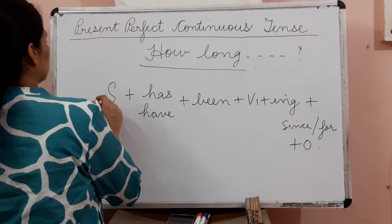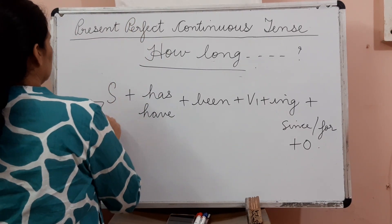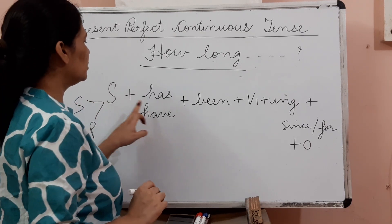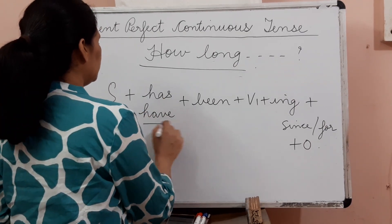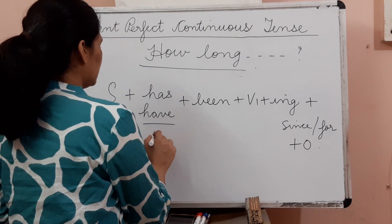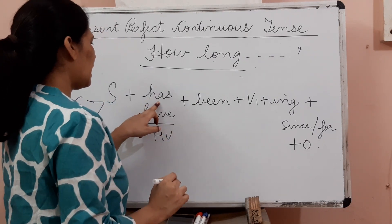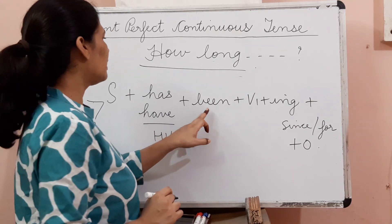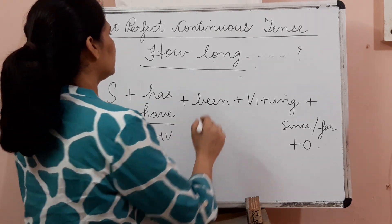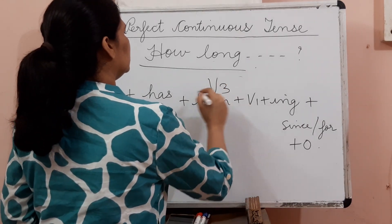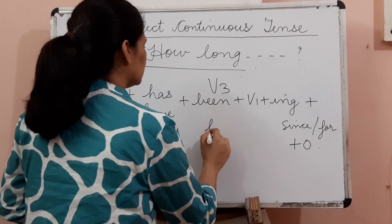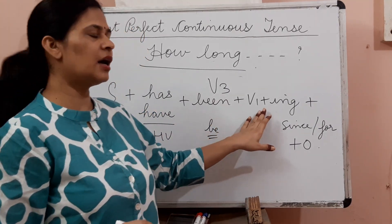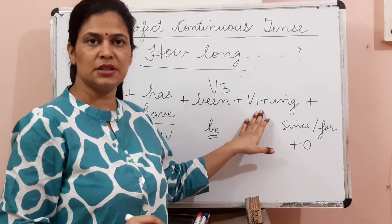We know that the subject is there — it could be singular or plural. For a singular subject, we have a helping verb that is 'has', and for plural it is 'have'. Then we have another 'been' form, that is the perfect form — the V3 form of 'be'. And then we have the continuous form: V1 plus -ing.